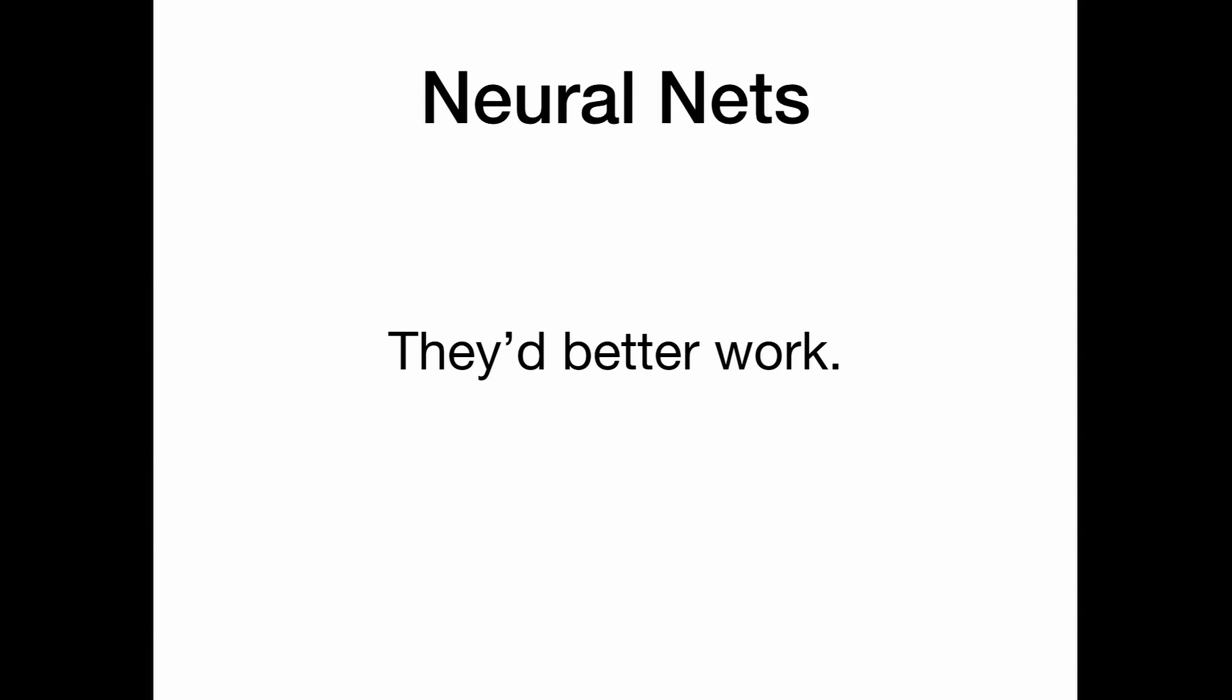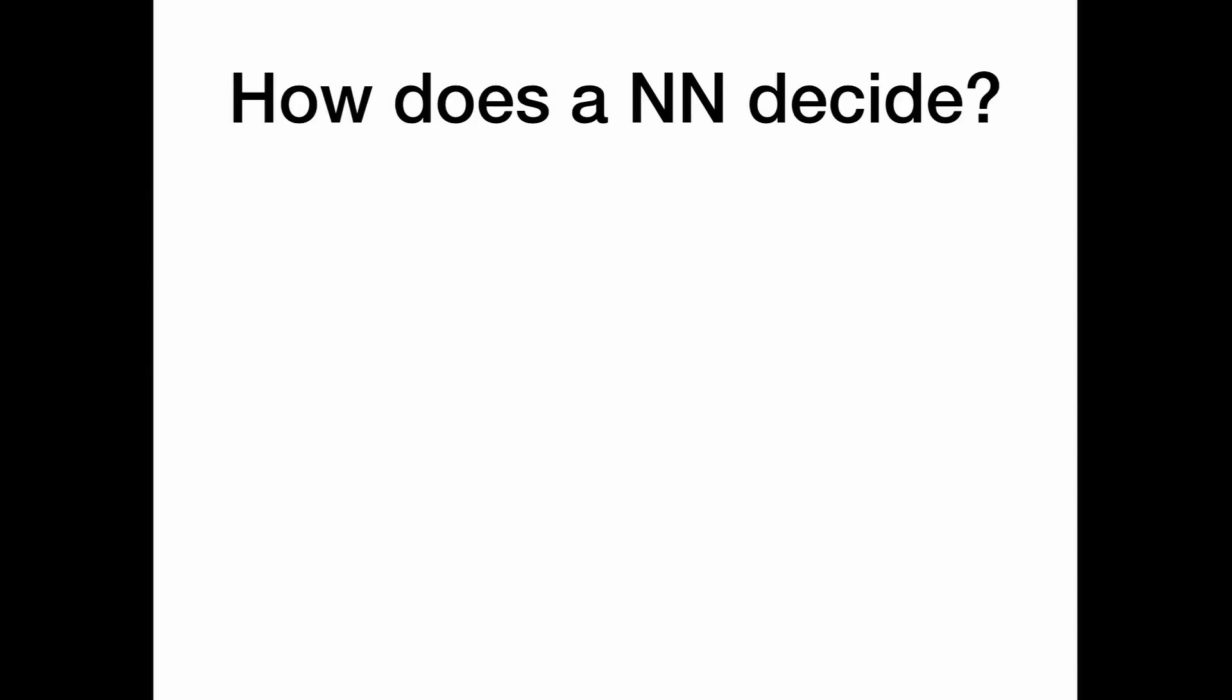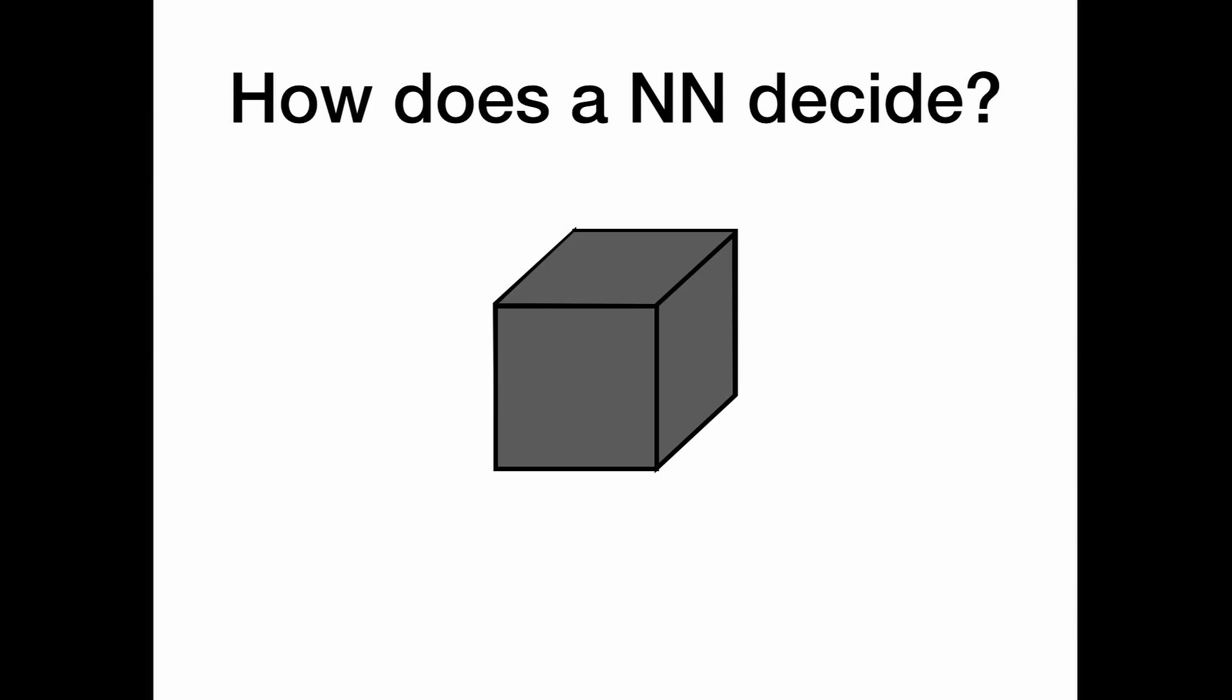So how do we understand how neural nets work? There is a common conception that neural nets are a black box. But are they really? In practice, we have access to every little parameter. We can actually measure every little activation. So our view is that neural nets are not really black boxes. In fact, they are totally transparent. And yet, despite this, they surprise us all the time.